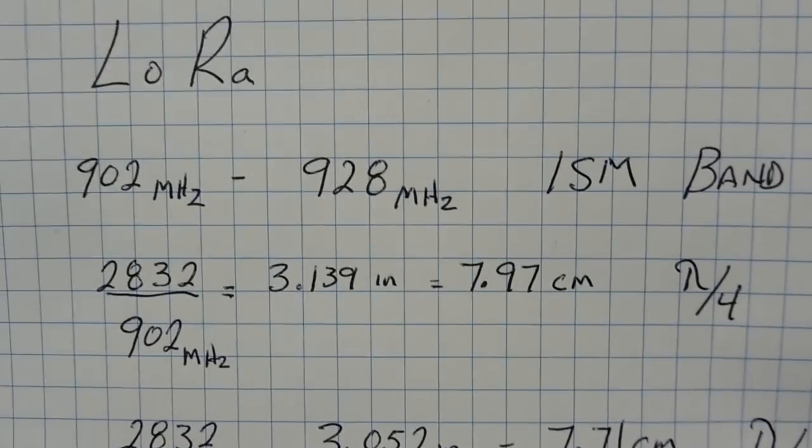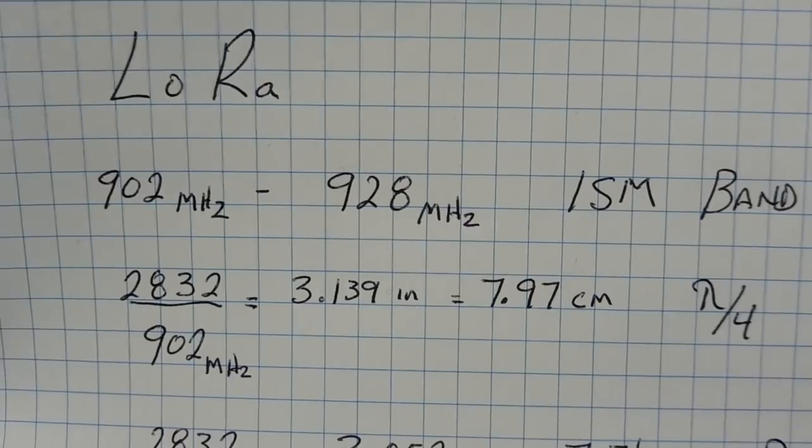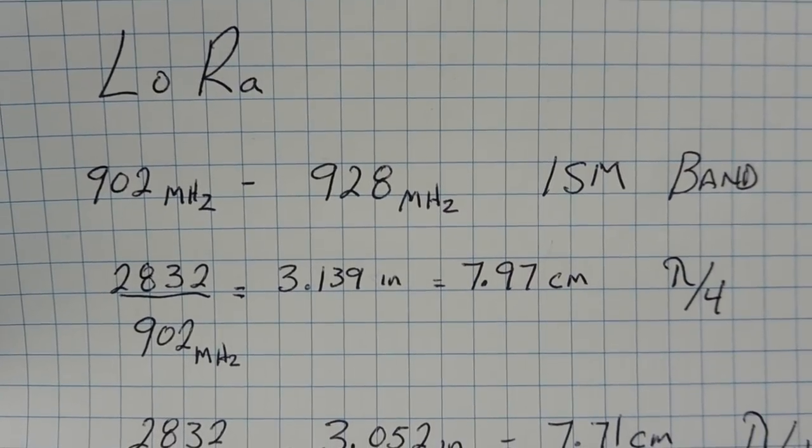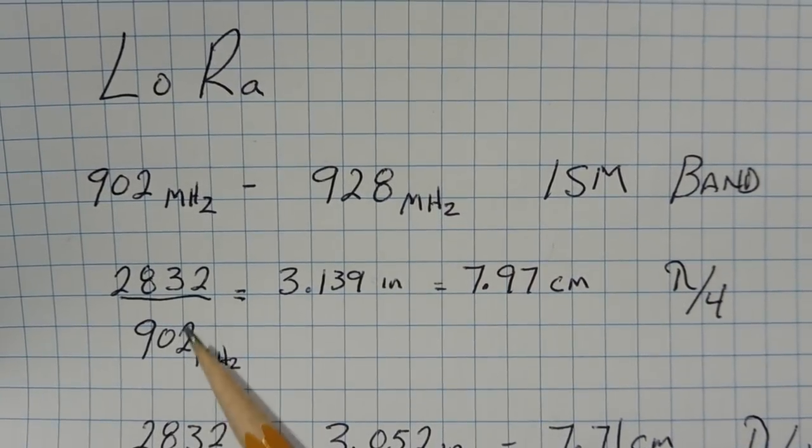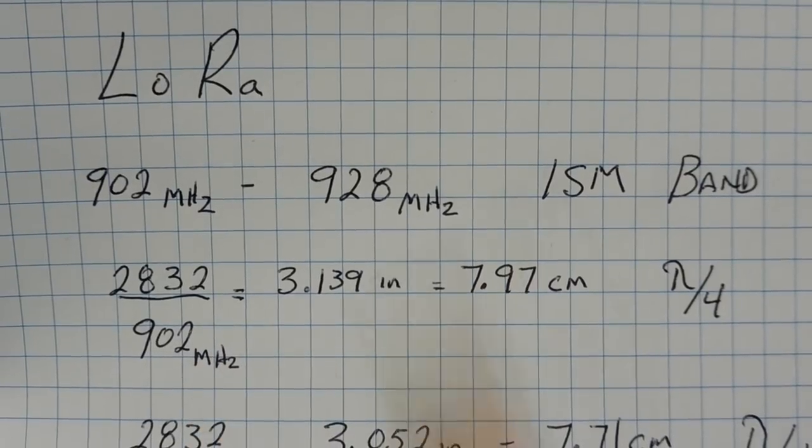Now in other countries, they use 433 megahertz for the LoRa system. So all you have to do is plug in 433 megahertz into this part of the equation and calculate it the same way.